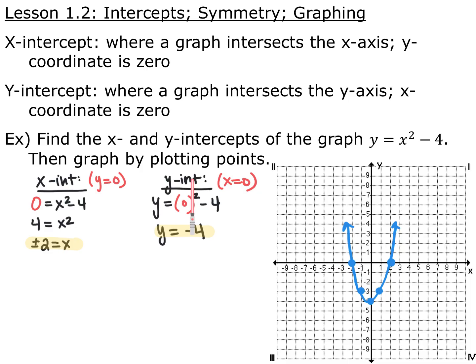For my y-intercept, I let x be 0. Zero squared is just 0, minus 4, so y equals negative 4. So my y-intercept is negative 4. Then I just connected my dots for my graph.